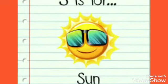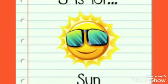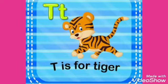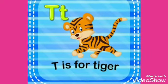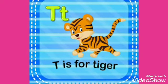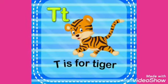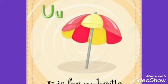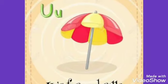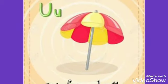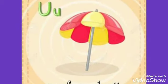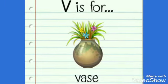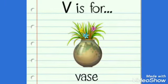S is for son. S is for tiger. U is for umbrella. V is for wedge.